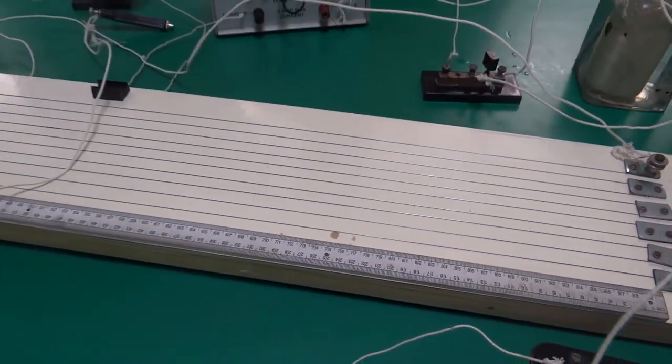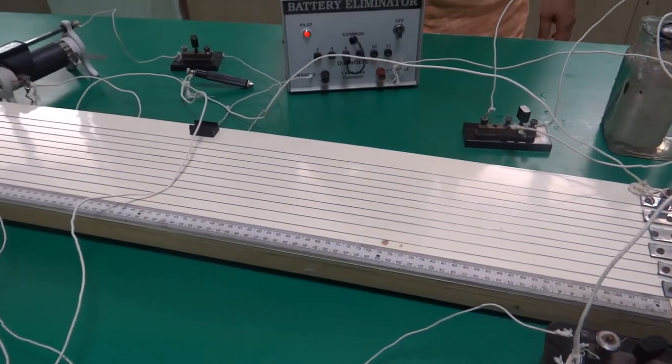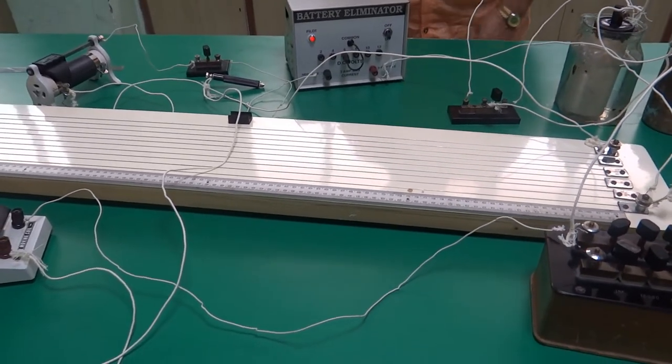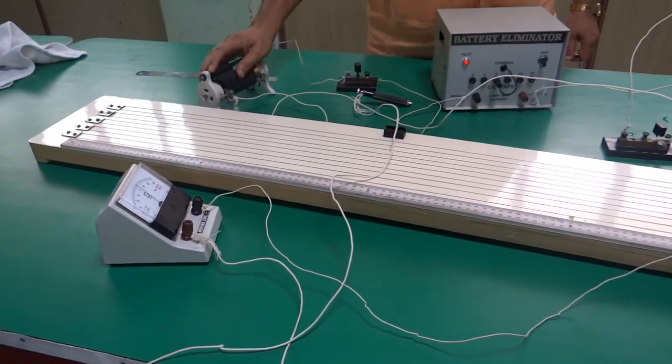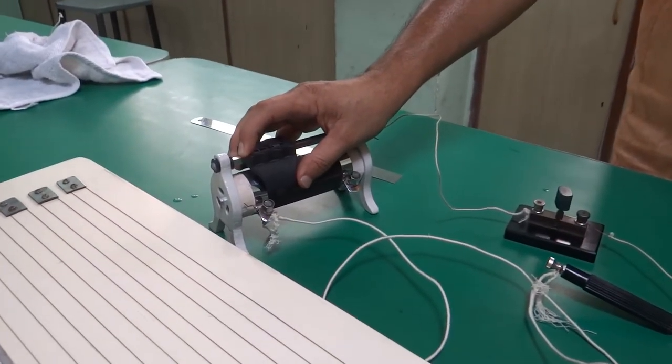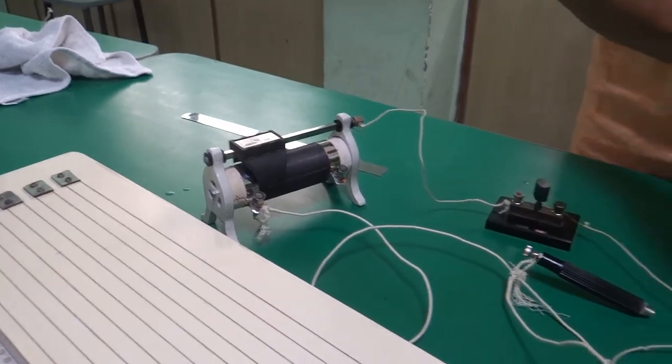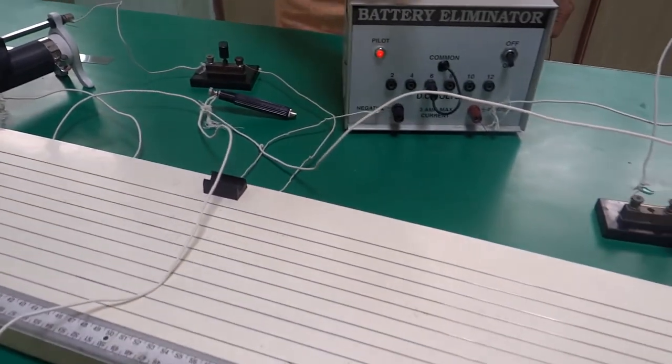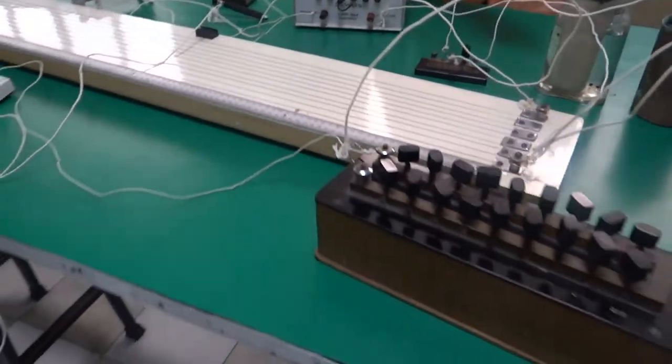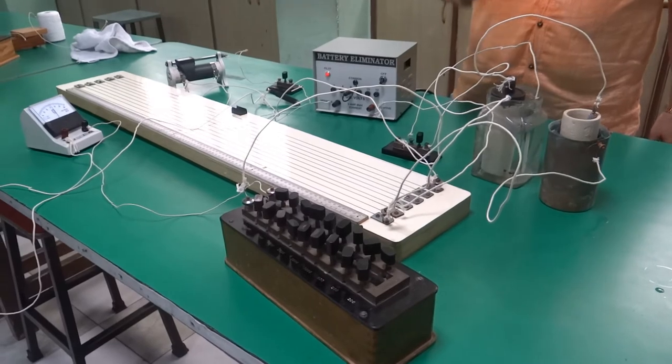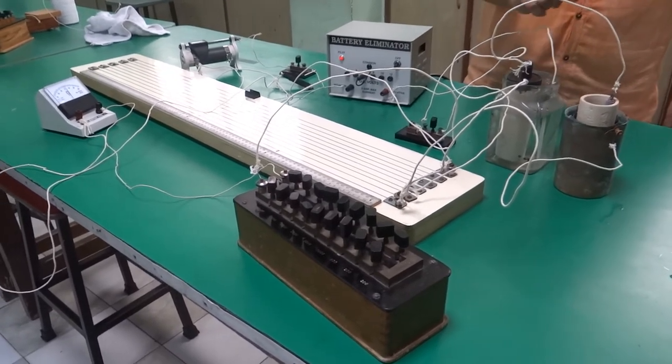Now I will tell you on the board how to calculate and compare EMF of two cells. For other readings, remember you have to change the position of rheostat. Change the position of rheostat a little so that current in the main circuit will change. Follow all the steps as I did for Leclanche first and Daniel second. Similarly, you take 4 to 5 readings to complete this experiment.